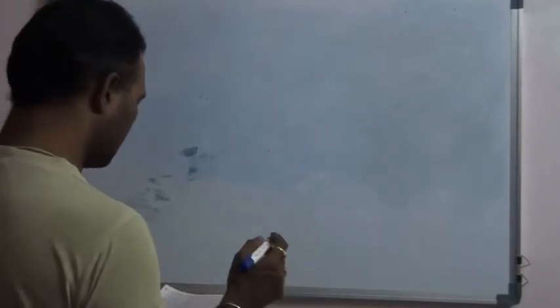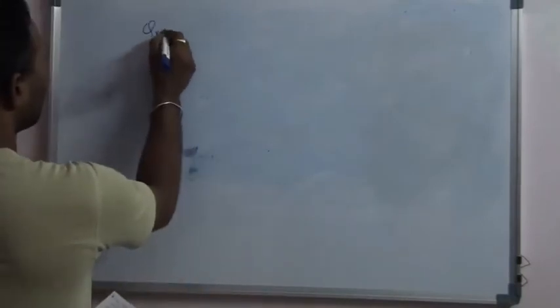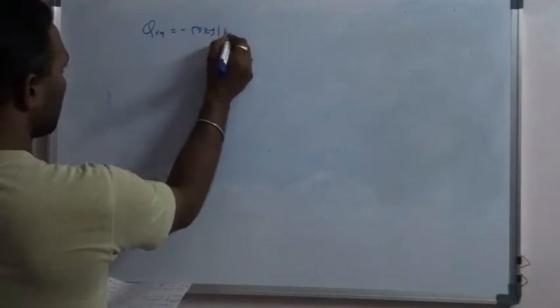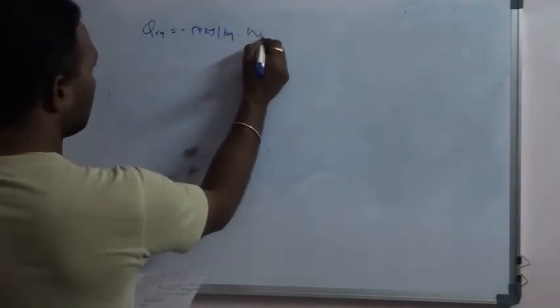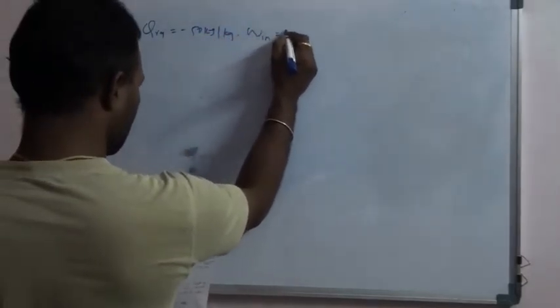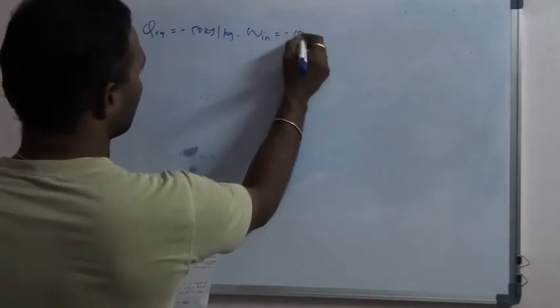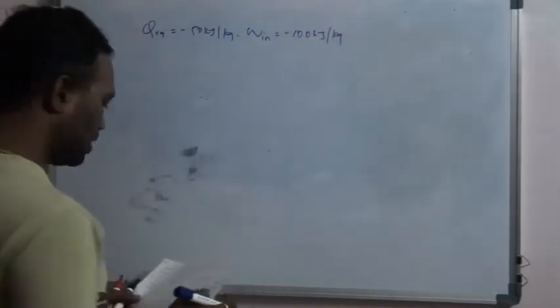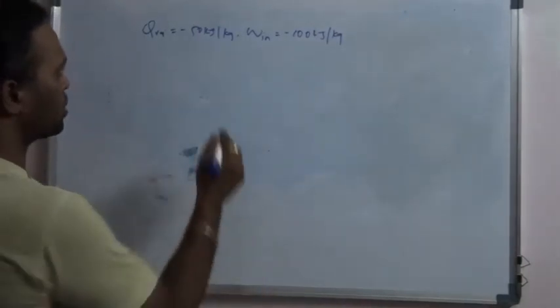This is 50 kilojoules and the work input is given. Q is given directly: Q rejected is given as minus 50 kilojoules per kg, and work input is given directly as 100 kilojoules per kg.